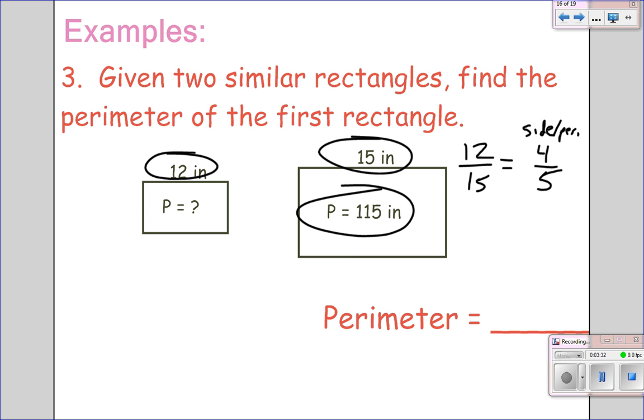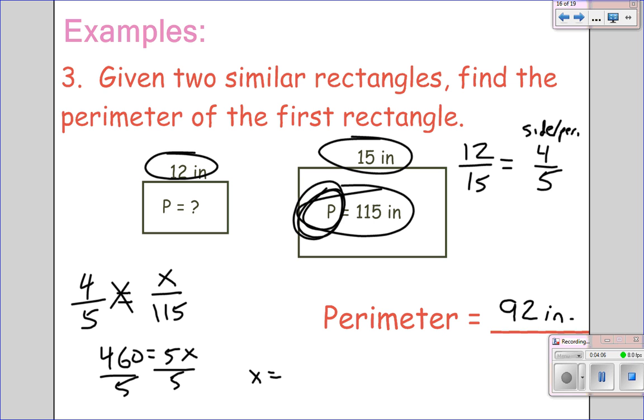So, I'm given a perimeter inside. So, the ratio I need is the perimeter ratio, which I have. So, 4 over 5 equals, let's see here, 12 is a smaller number. So, x will go next to the smaller number over the perimeter that we do know. Cross multiply, so you get 460 equals 5x. And divide by 5. So, x equals 92 inches will be the perimeter.